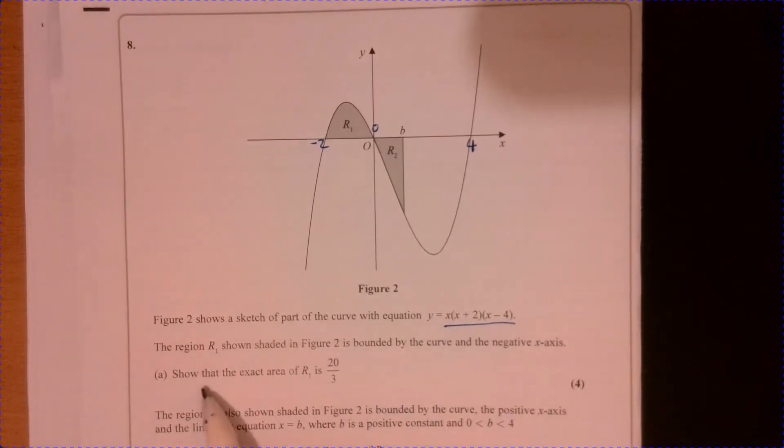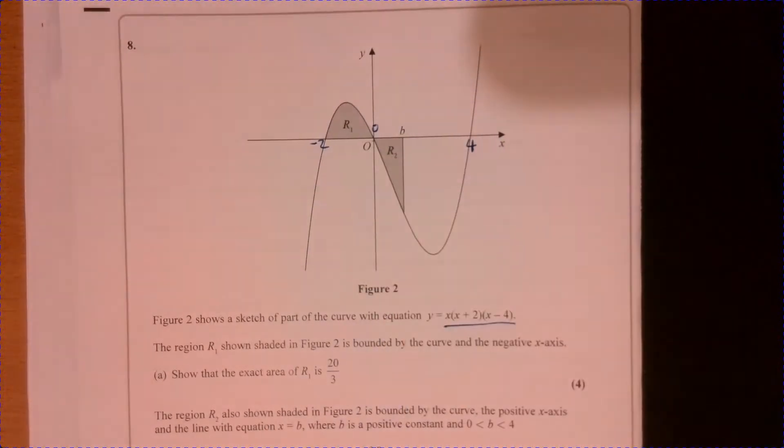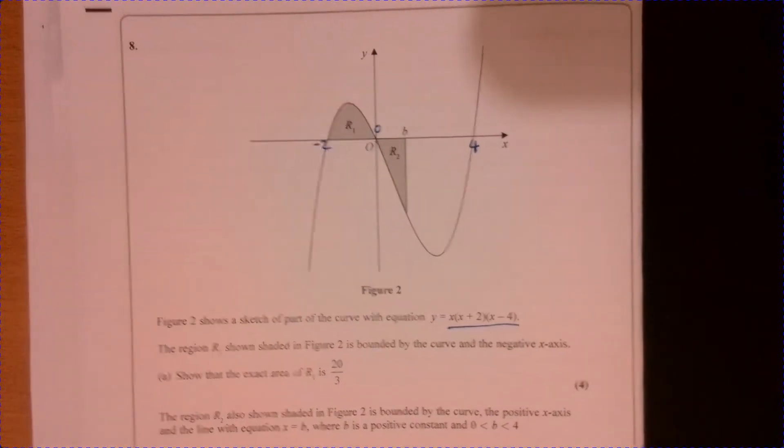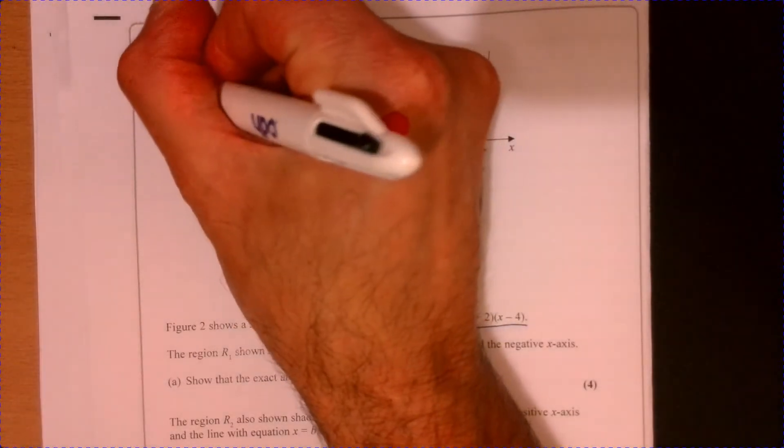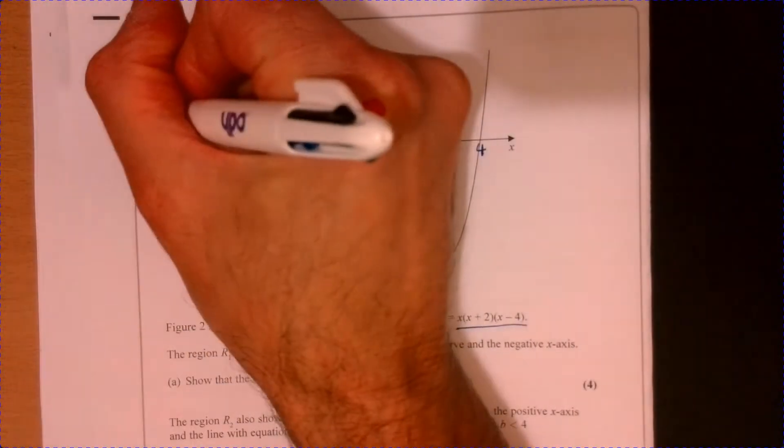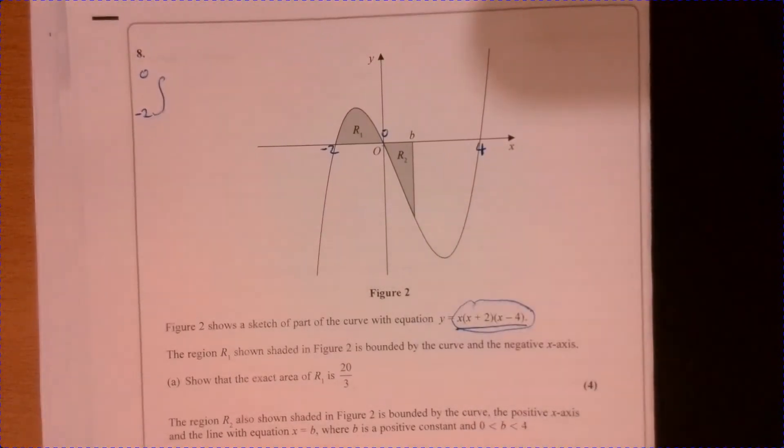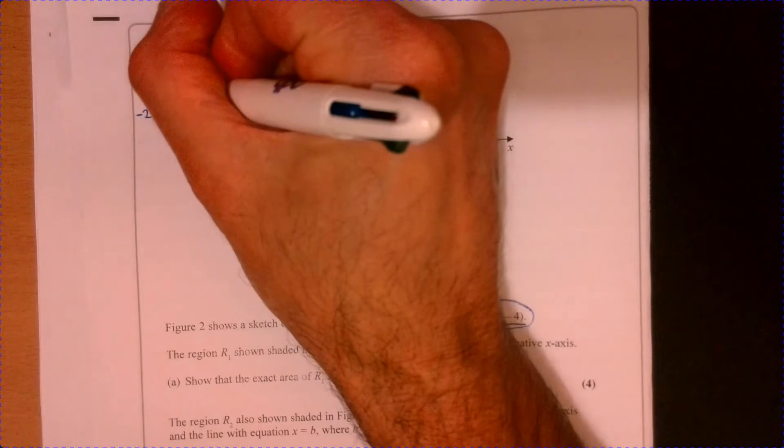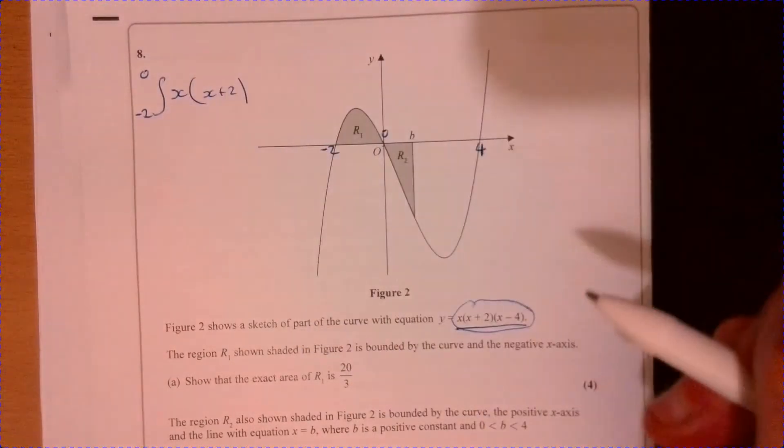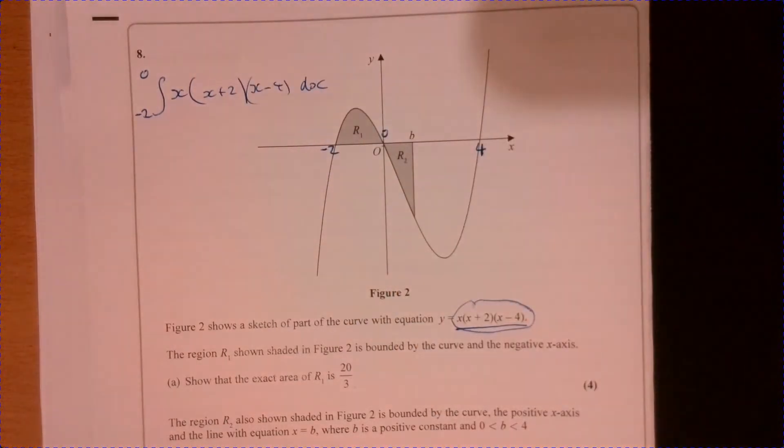So what are we being asked to do? Show that the exact area of this is going to be equal to 20 over three. Forget that we know the answer for a minute. We're being asked to integrate from minus two to zero, and this thing just here. So it's just worth writing that down.